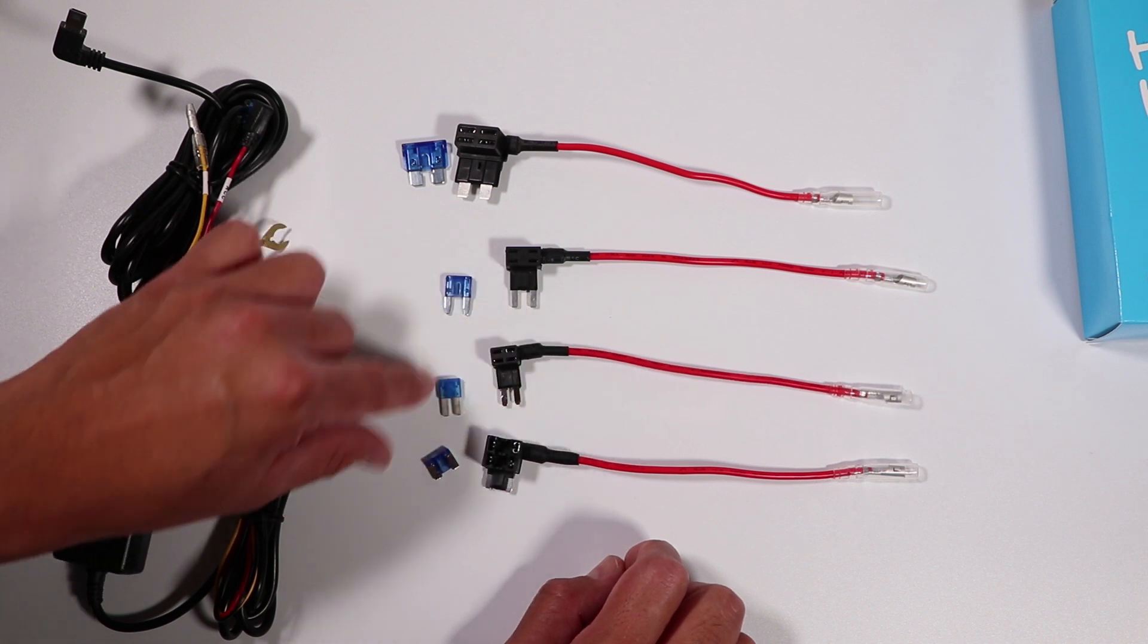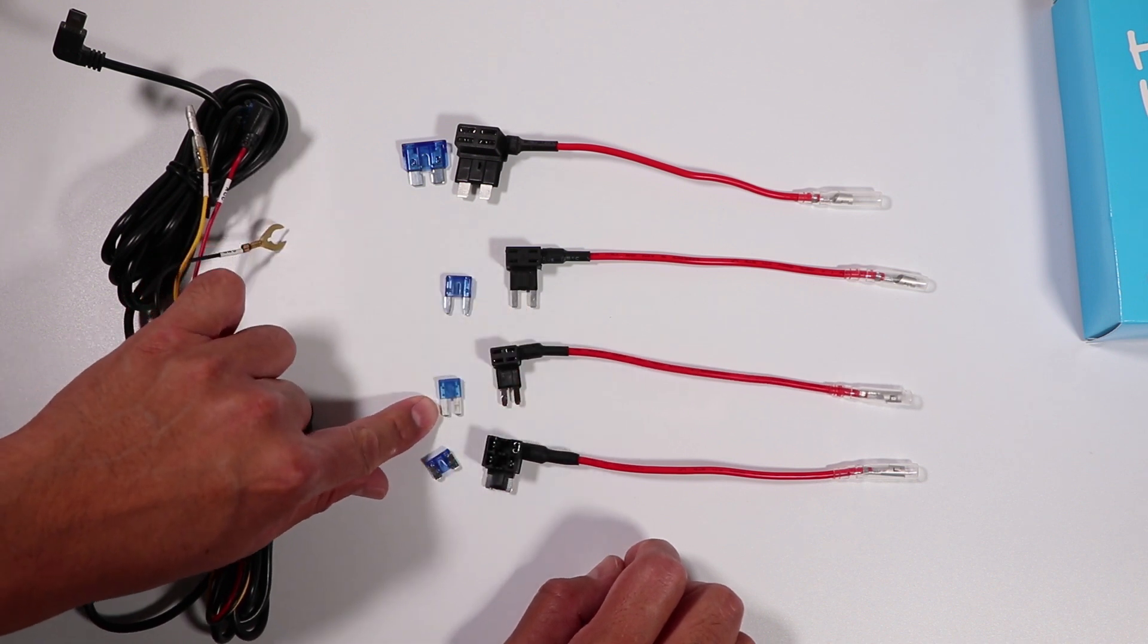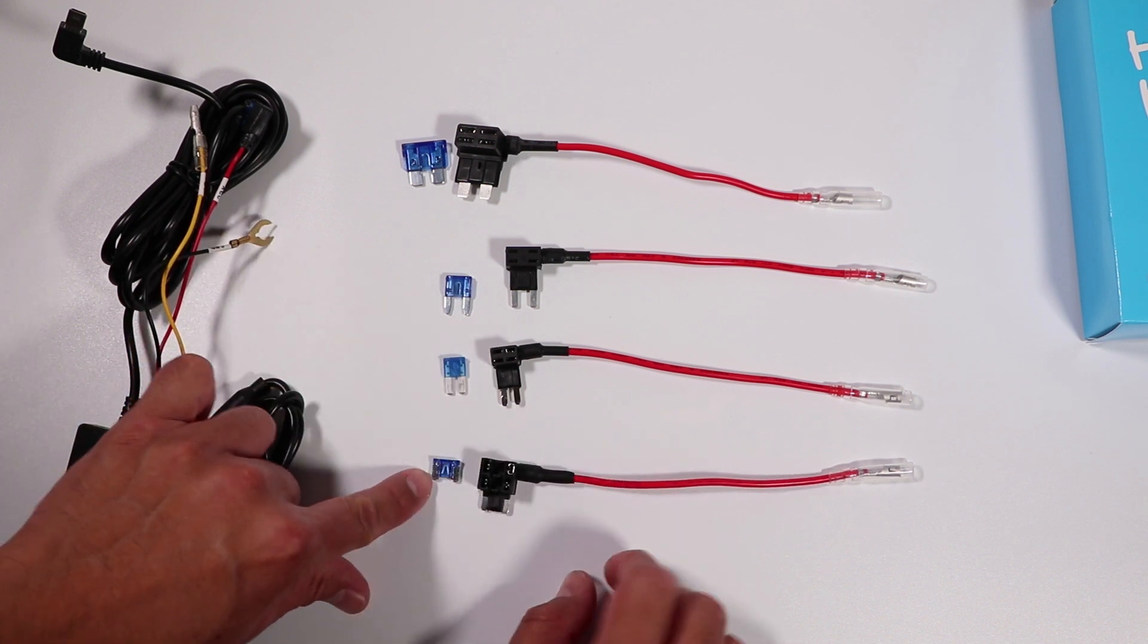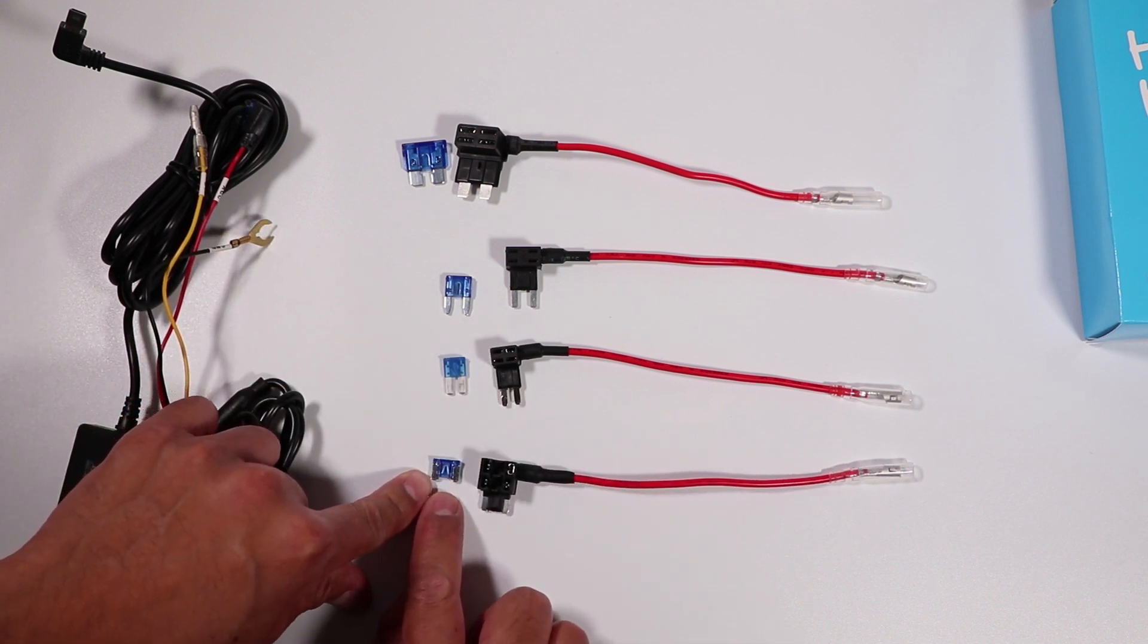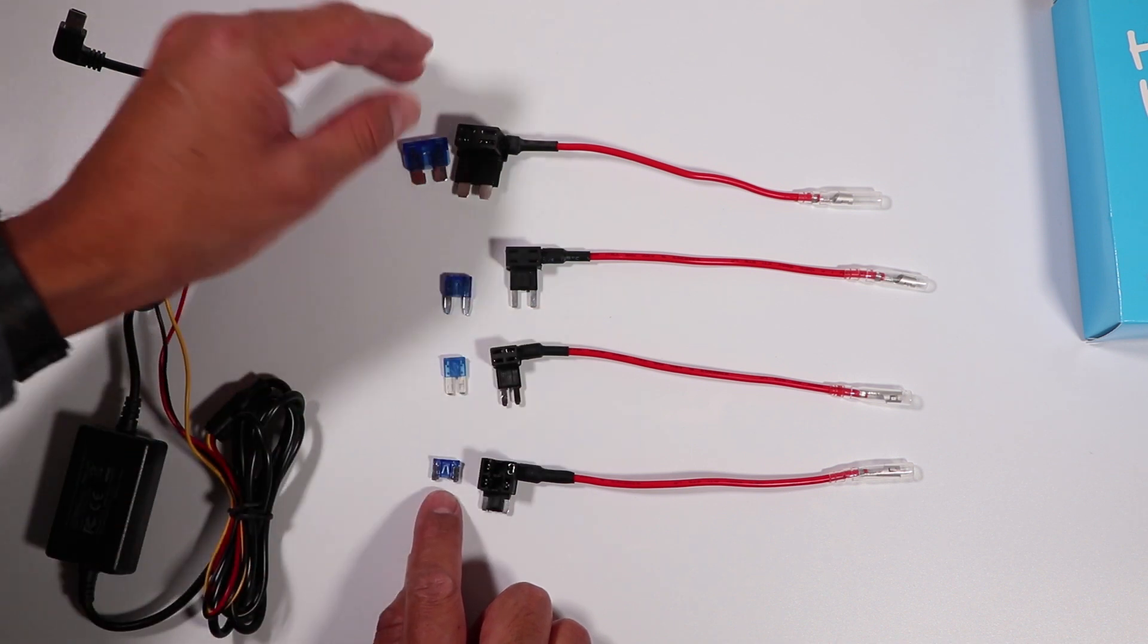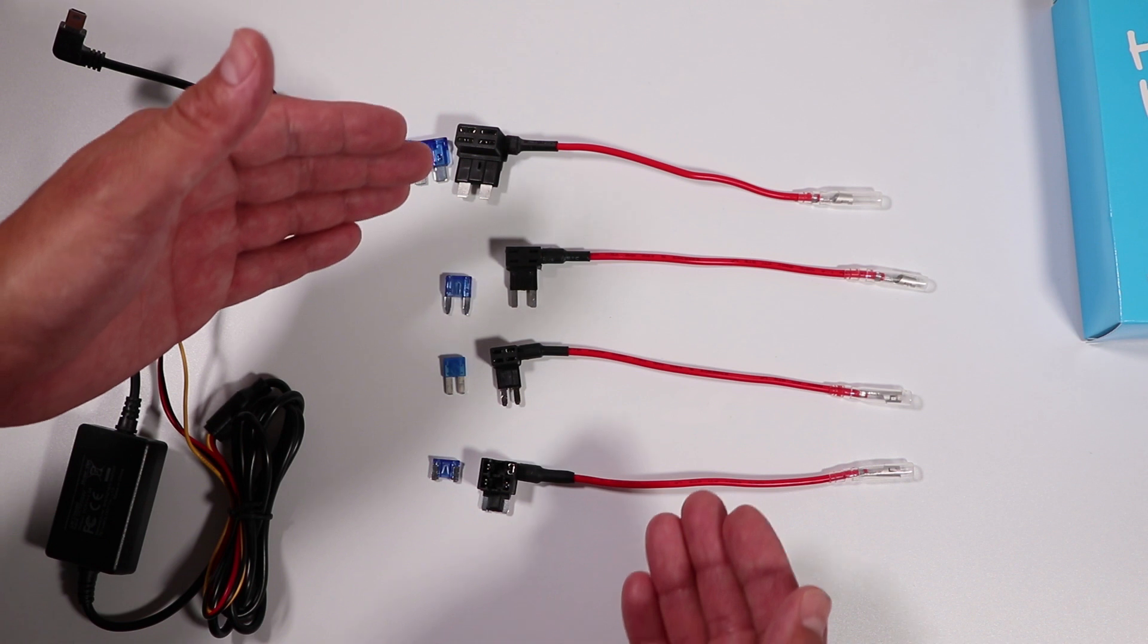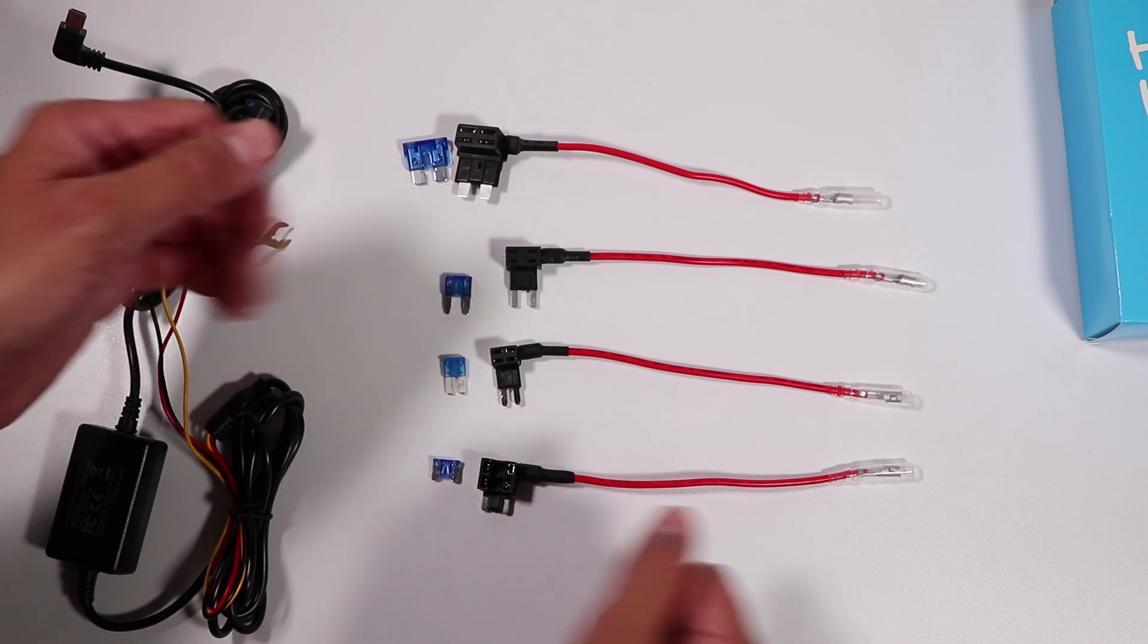In my case, on newer cars, it uses the micro fuse size. And then finally, there's this oddball size, which is called the low-profile mini fuse. So it's nice that they included all four of them. That way, I have the ability to choose the size that matches my car.